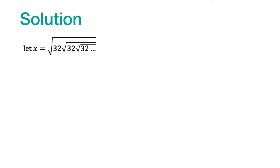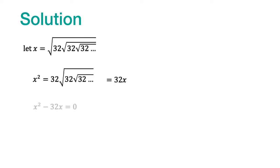The first thing we do is square both sides, so we find that the first 32 gets extracted out, but the product of the numbers after that is still X — because this is an infinite product. So we can write this as 32X, which means the equation we have is X squared minus 32X equals 0.